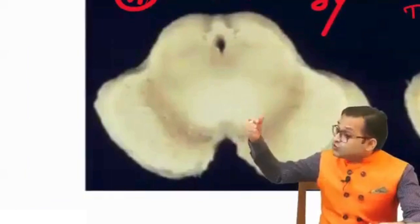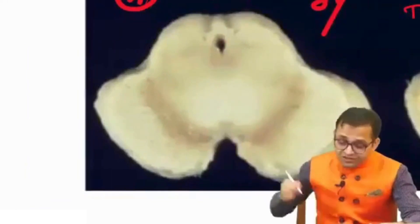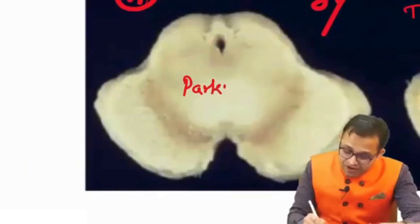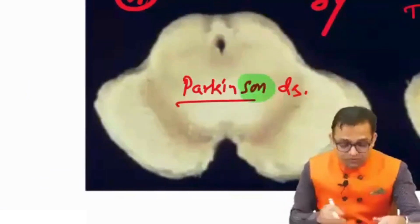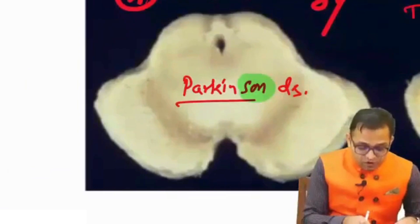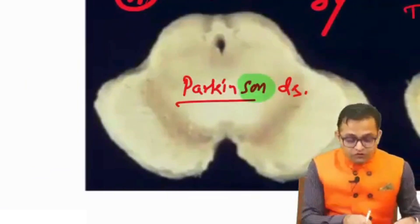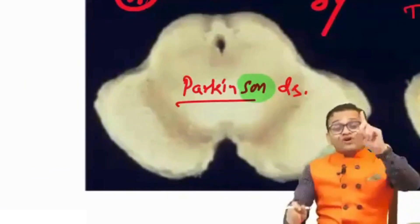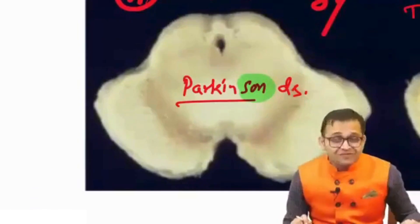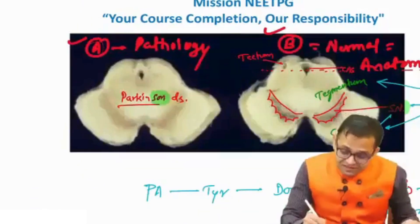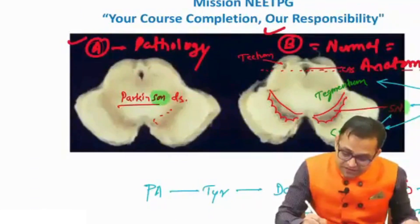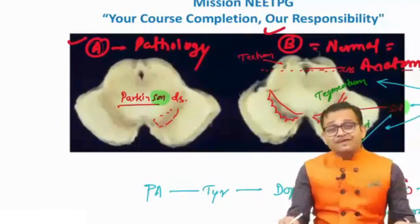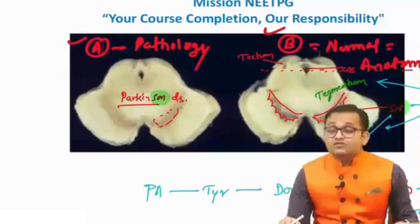This specimen is not blackish, so there is a decrease in dopamine here. This is Parkinson's disease. Here there is depigmentation — a less pigmented area in the substantia nigra. Getting the point? So this is our Parkinson's disease.